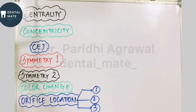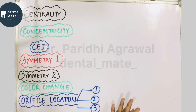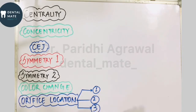They determined these laws by studying 500 different pulp chambers. The cementoenamel junction, which is the CEJ, is the most important anatomic landmark for determining the location of the pulp chamber and the root canal orifice. These nine laws help us determine the number and location of orifices on the floor of the pulp chamber.